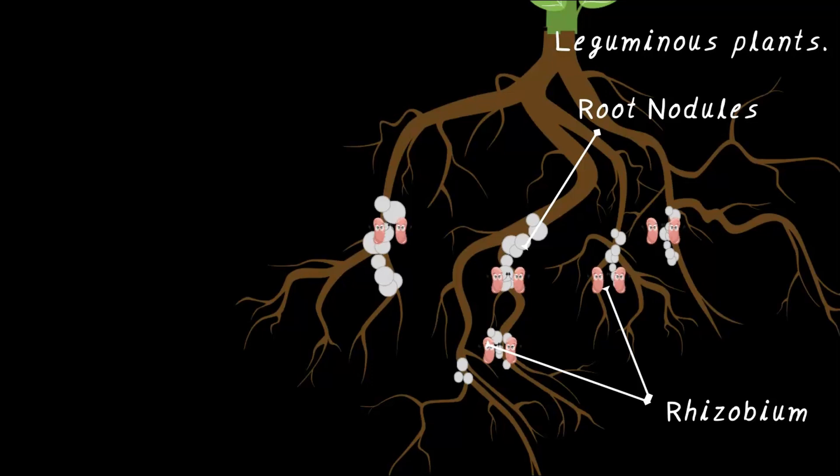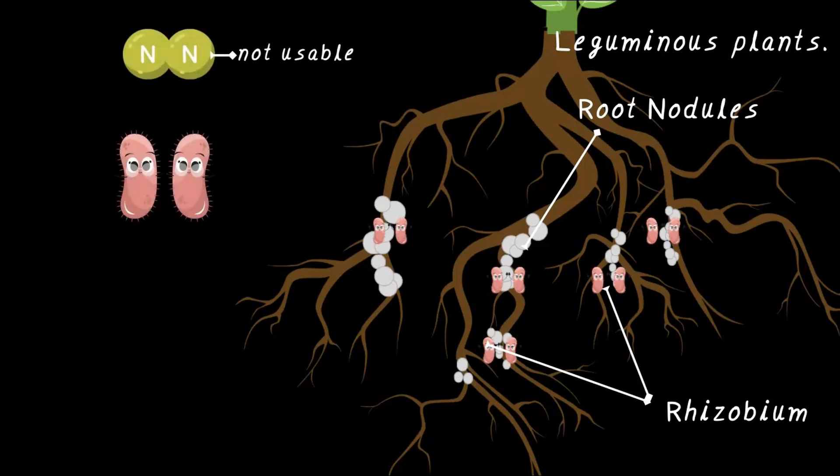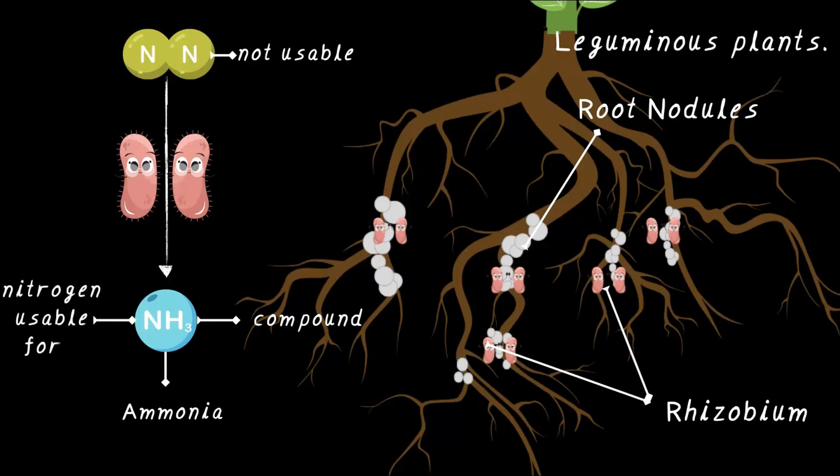And here is where it gets really interesting. Rhizobium, as I said, is like a personal cook for the plant. It takes nitrogen from the air, the unusable nitrogen floating around, and works its magic, or rather a chemical process, to convert it into NH3, a compound called ammonia. Now, why does rhizobium do this? Why is ammonia so important? Well, this compound contains nitrogen in its usable form. In simple terms, rhizobium unlocks the nitrogen from the air and transforms it into something that plants can actually absorb and use to grow.